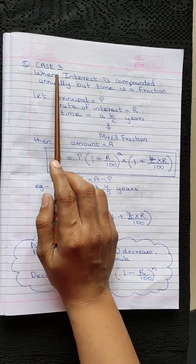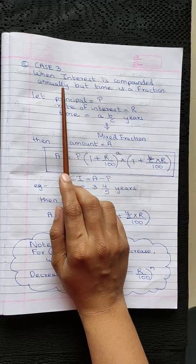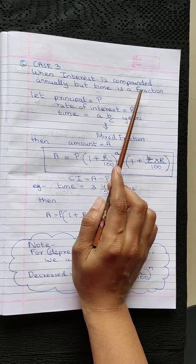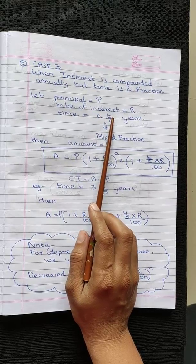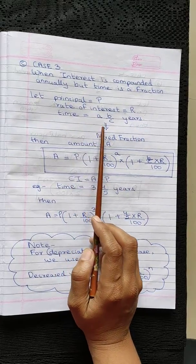Now consider case 3, when the interest is compounded annually but the time is in fraction. We have the same principle, we have the same rate of interest R, but the time is given as a fraction.